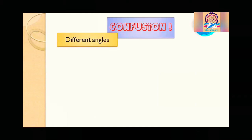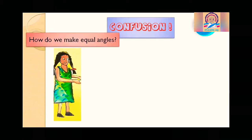Every time Mohini is making a shape that comes with a different angle. So if she makes equal angles, then she will make the same shape. For making the same shapes, it is important to make equal angles. Then how to make equal angles? Here comes the angle tester into the picture.